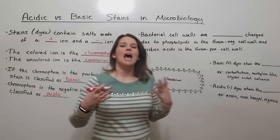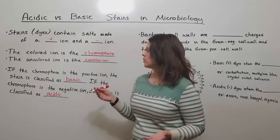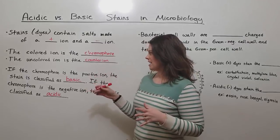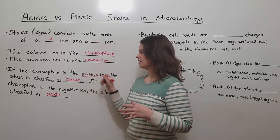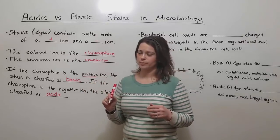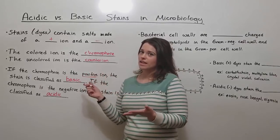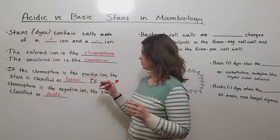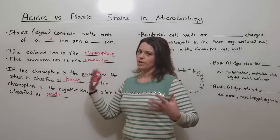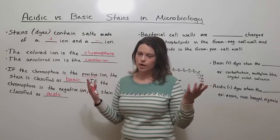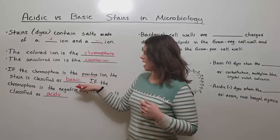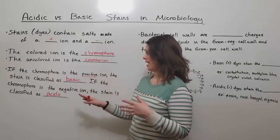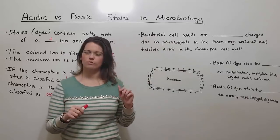You might ask yourself, how am I supposed to remember this? Well, I had a student once that came up with a really good way. She said that it's always a positive thing to have basics in your refrigerator or in your closet. So you can think about it in one of those ways - it's positive to have the basics in your refrigerator: your milk, your eggs, your cheese, your bread, that kind of thing. That can help you remember that when the chromophore is positive, that's a basic stain, and if it's negative, it's an acidic stain.